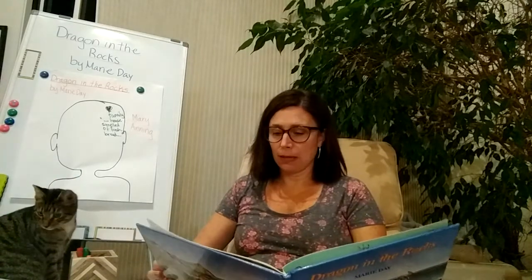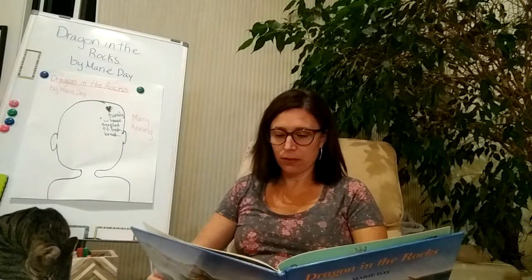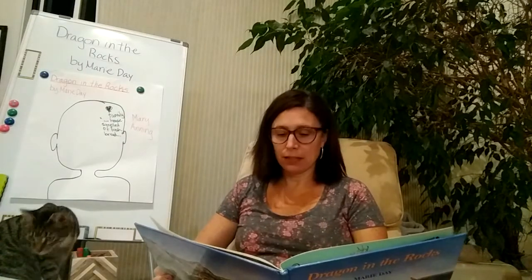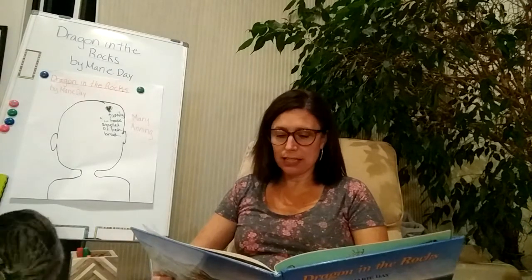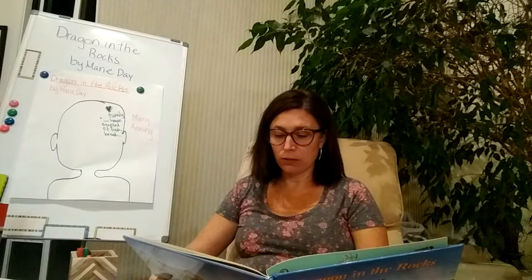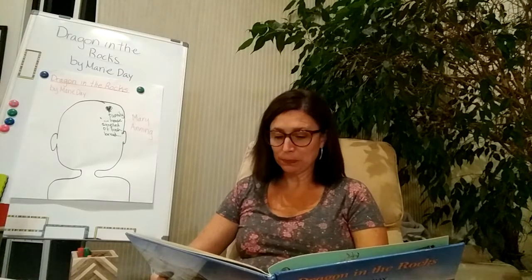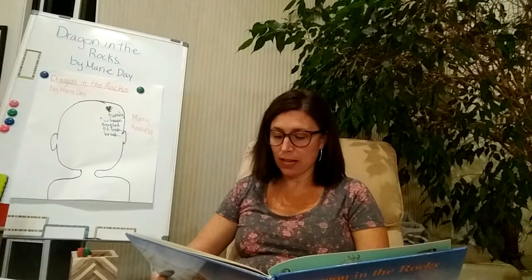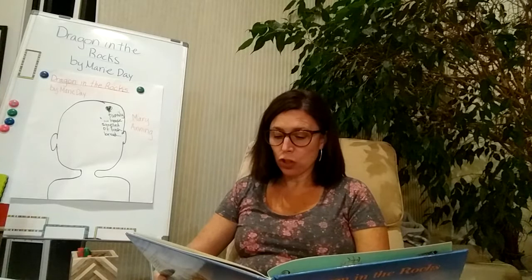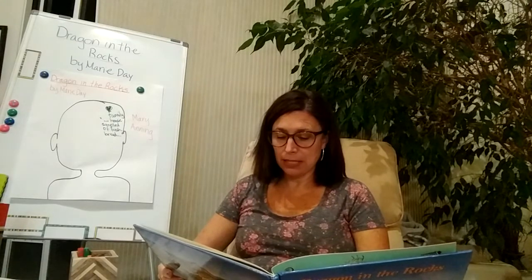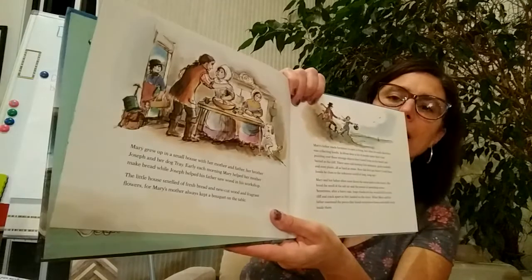Mary's father made furniture to earn a living, but what he really liked best was collecting fossils. In those days, a lot of people spent their time puzzling over these strange objects they found lying on the beach and buried in the cliff. There were odd-looking fish skeletons, giant seashells, and even plants, all as hard as stone. How did they get there? Could these fossils be clues to the unknown world of long, long ago? Mary and her father often went down the steep path to the beach. They loved the smell of salt air and the sound of pounding waves. Sometimes, after a heavy rain, huge chunks of clay would fall from the cliff and crack apart as they landed on the shore. When Mary and her father examined the pieces, they found mysterious bones and shells stuck inside them.